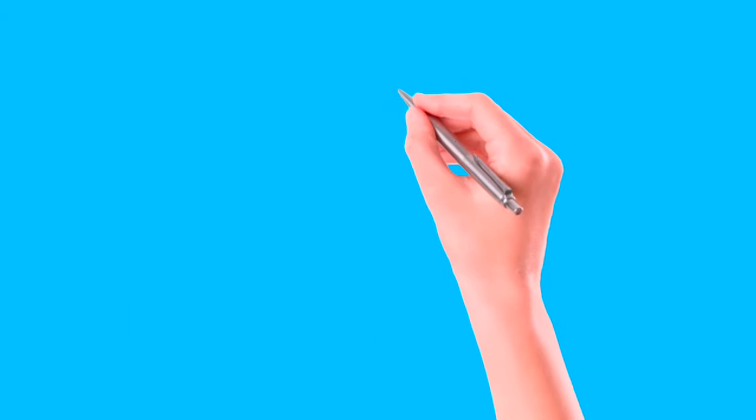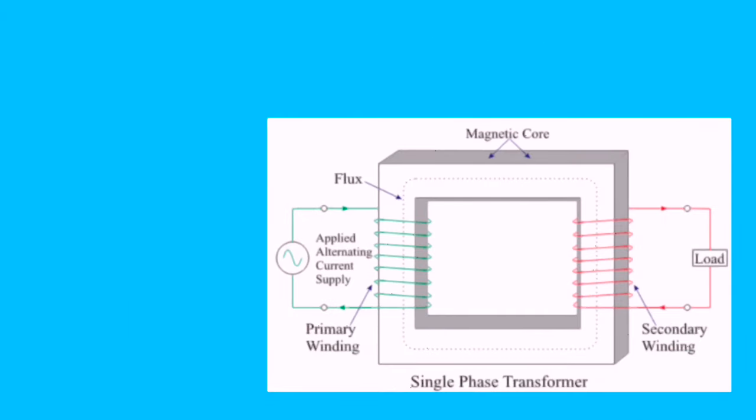The winding in which we supply input source to the transformer, that winding is called primary winding. And to which the load is connected, that winding is called secondary winding of the transformer.